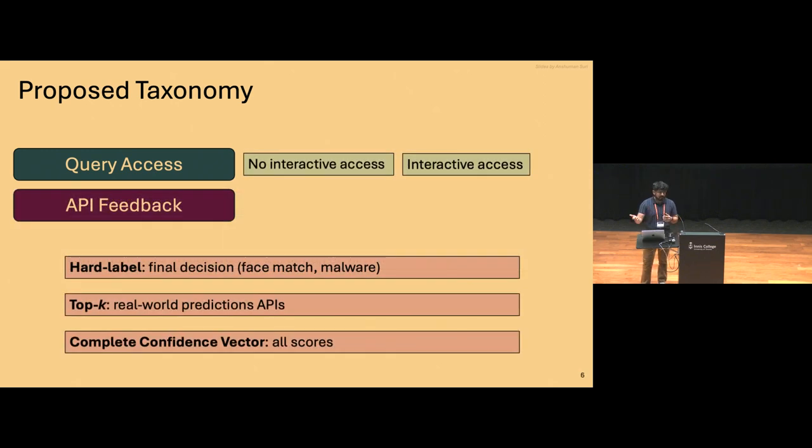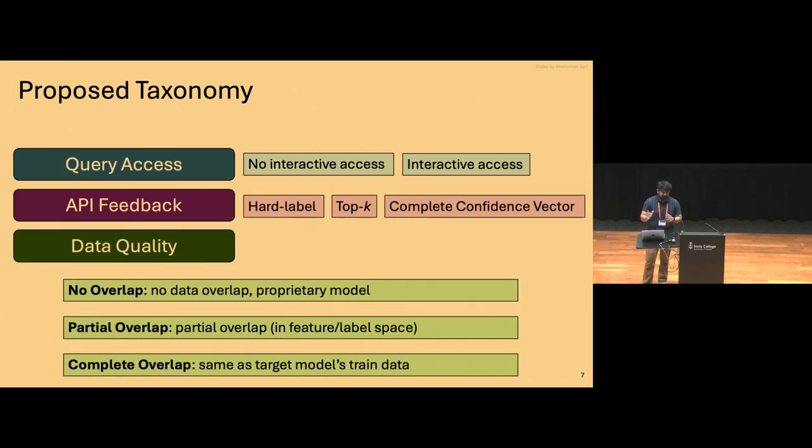The second is, if you do get feedback, what kind of granularity do you get the feedback for? Is it just the actual label that the model predicted? Is it the full score of probabilities or is it some top-k prediction probabilities?